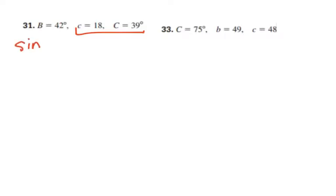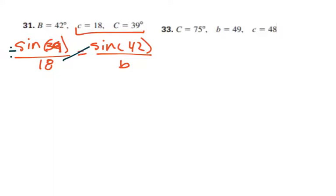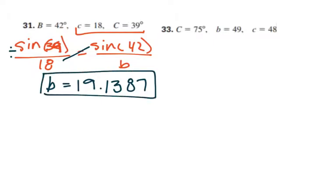We can set up a proportion of sine of C over 18, and C is actually 39, so we'll just fill that in. And then sine of 42 over the B side length. So if we cross multiply and divide, we're going to get sine of 42 times 18 divided by sine of 39. And so we get a B value of 19.1387. And then to get the angle A, we can take 180 minus the two known angle measures. So 180 minus 42 minus 39, that gives us 99 degrees.